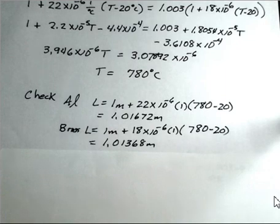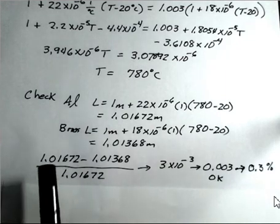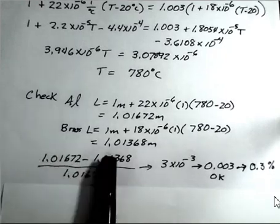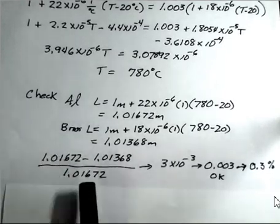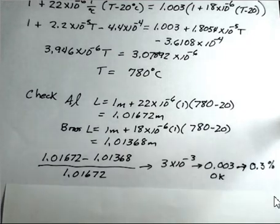And then what about the percent change? So I subtract the brass number from the aluminum. I divide by the aluminum. And I come up with 3 times 10 to the minus 3. That is 0.3% larger. The aluminum side is 0.3% larger at 780 degrees Celsius. So the check works out.